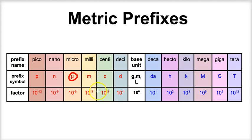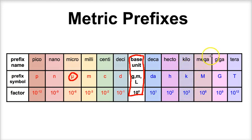The base units for length, volume, and mass are meters, liters, and grams. Working upward: deca means ten, so a decameter is 10 meters; hecto means one hundred, so a hectometer is 100 meters; kilo means one thousand, so a kilometer is 1000 meters; mega means one million — a megabyte is one million bytes; giga means one billion — a gigabyte is one billion bytes; and tera means one trillion — a one-terabyte hard drive stores one trillion bytes of information.